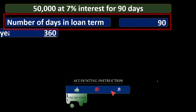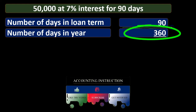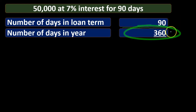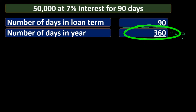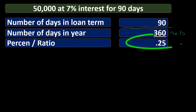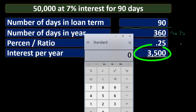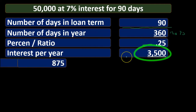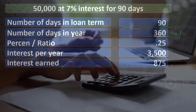Now another method: we start with the number of days in the loan — 90 — and divide by the number of days in the year, 360. This is called a ratio: we're comparing the loan term to the full year. 90 ÷ 360 = 0.25. We then take that ratio of 0.25 and multiply it times the annual interest of $3,500 (which is 50,000 × 0.07), giving us $875.